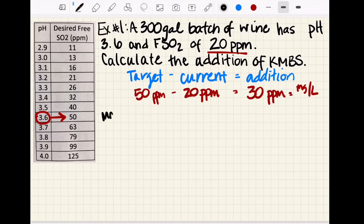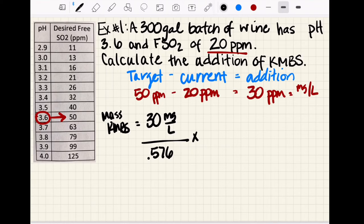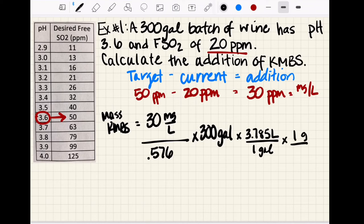So our mass of KMBS equals 30 milligrams per liter divided by our 0.576 to account for potassium metabisulfite containing 57.6% SO2, and then we're going to multiply by 300 gallons times 3.785 liters per gallon, and then our conversion factor of grams to milligrams is one gram per thousand milligrams. We'll cancel our units: gallons cancel, and we'll end up with liters.